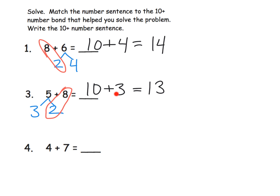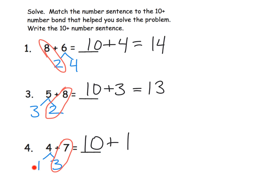We use this strategy because 10 plus 3 is way easier to solve than 5 plus 8. Now here's our first example with 7. 7 is closest to 10, so I'm going to decompose that 4 — I know I need a 3 to make 10, so 7 plus 3 is 10. Our 10-plus sentence is 10 plus 1, and 10 plus 1 is 11. Therefore 4 plus 7 equals 11.